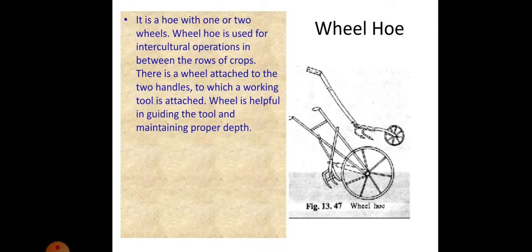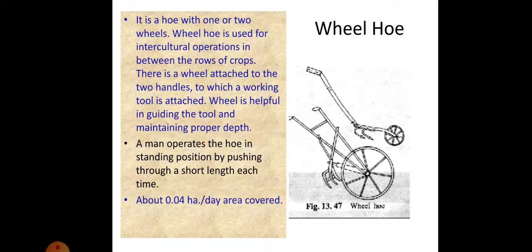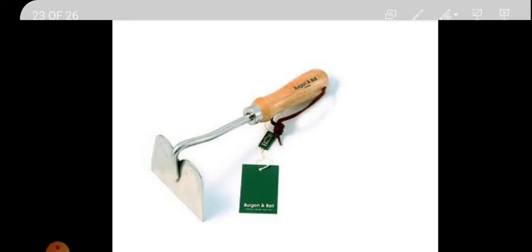Wheel hoe: if a hoe has a wheel, it is called a wheel hoe. It has one or two wheels and is used for intercultural operations between the rows of a crop. A working tool is attached to two handles with a wheel to guide the tool and maintain proper depth. A person operates it in a standing position by pushing through a short length each time. About 0.04 hectare per day area is covered.